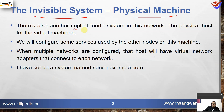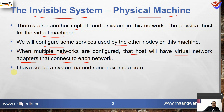There is also an implicit fourth system — the physical host for the virtual machines. We will configure some services used by other nodes on this machine. When multiple networks are configured, that host will have virtual network adapters connecting to each network. I have set up the system named server.example.com as my physical machine.